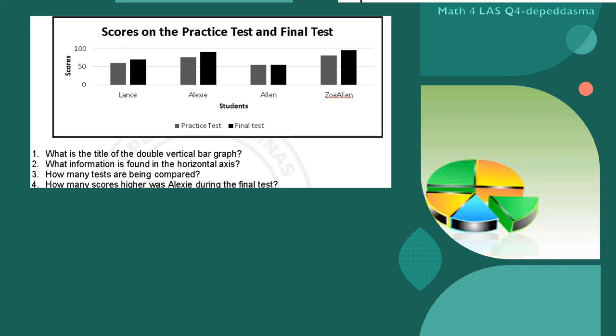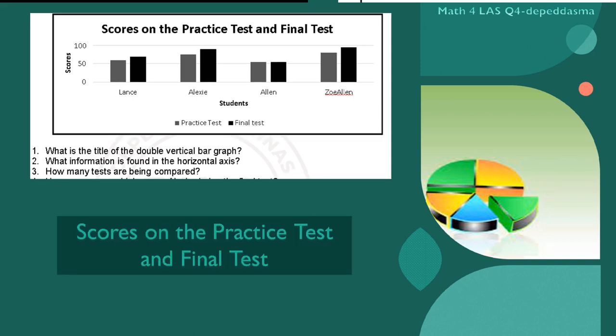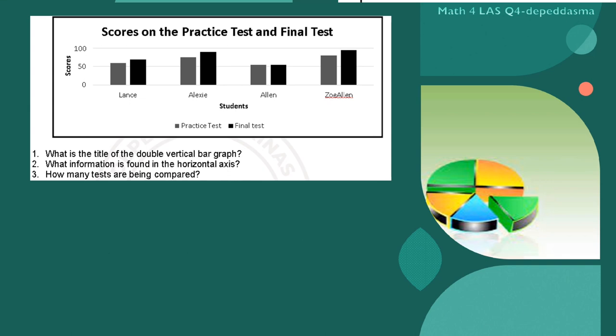Let's analyze and answer the given questions. 1. What is the title of the double vertical bar graph? 2. What information is found in the horizontal axis?